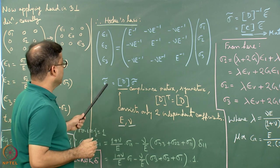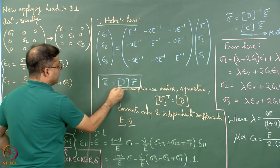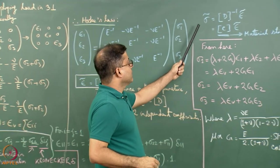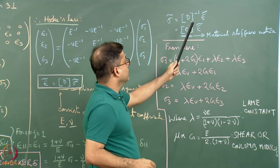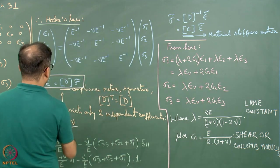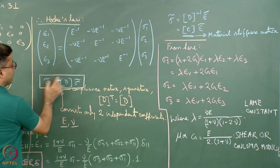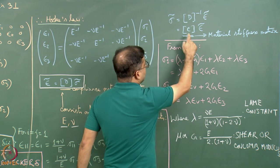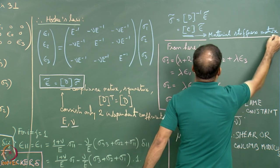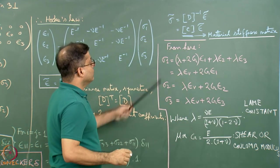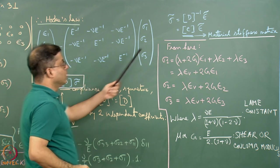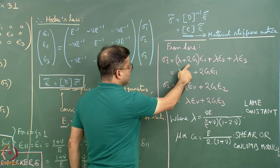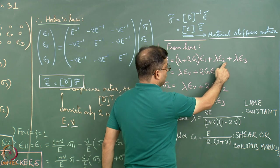We can further work with these three equations to write stress equal to D inverse times strain, i.e., sigma = C times epsilon. That inverse matrix is called C, the material stiffness matrix. Inverting D gives sigma_1 = (lambda + 2G) * epsilon_1 + lambda * epsilon_2 + lambda * epsilon_3.